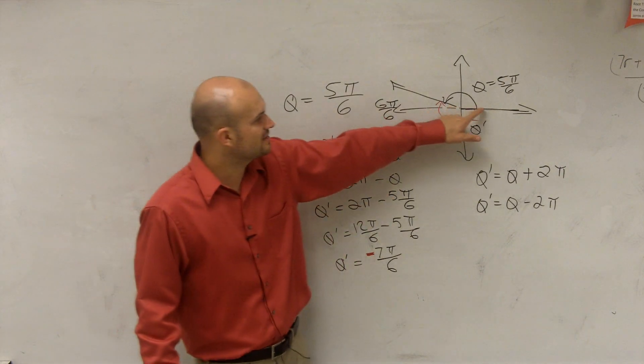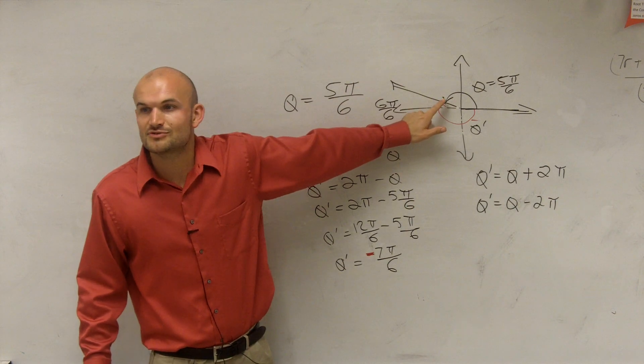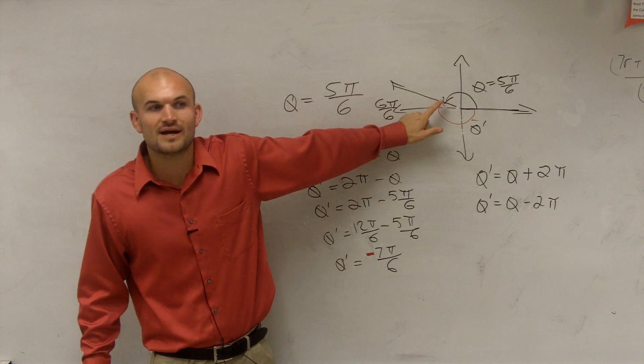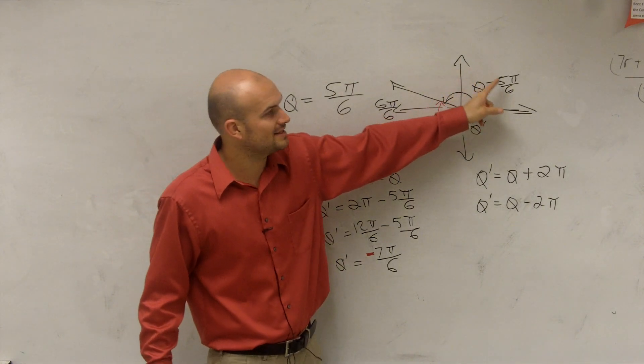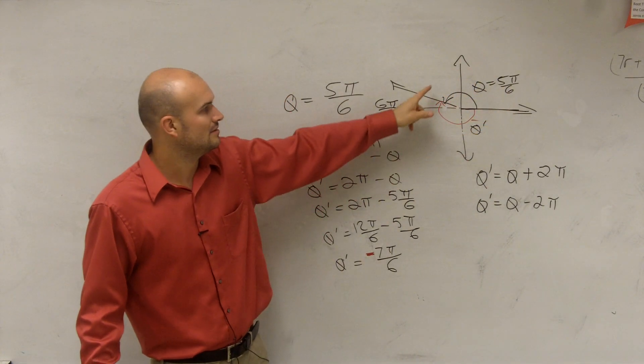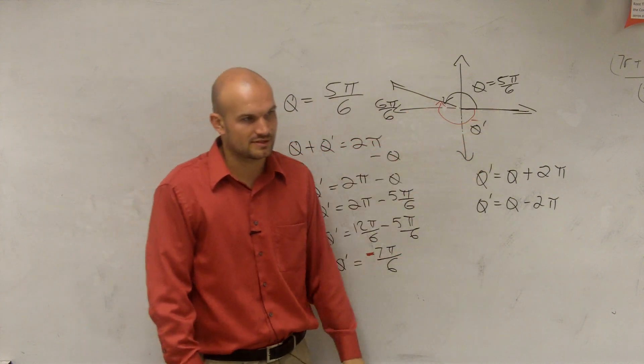And what we're really doing, if you think about it this way, if you take 5π over 6, right, if I subtract 2π, how far is 2π? 2π is around the whole circle, right? So if I went around 2π in the negative direction, I would go back to my terminal side, which would give you that negative 7π over 6.